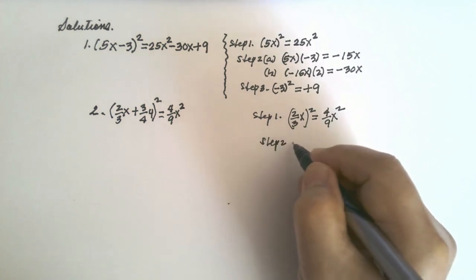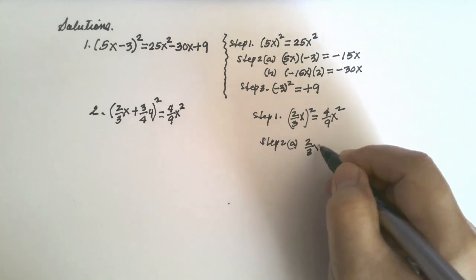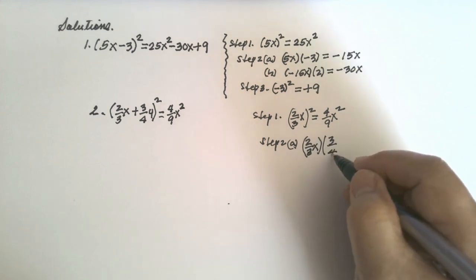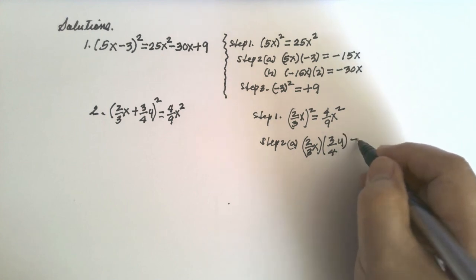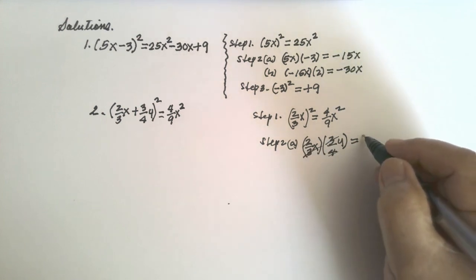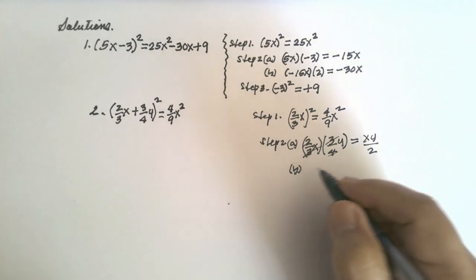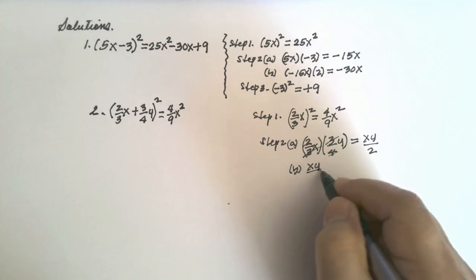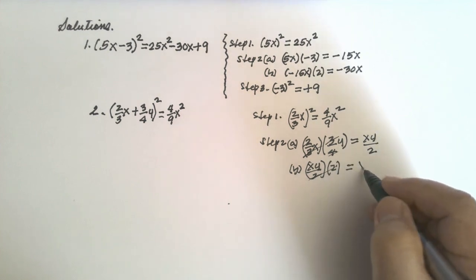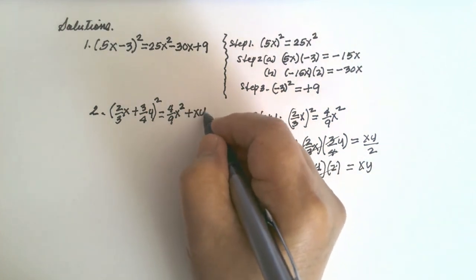Step number two, letter A: multiply the first term by the second term — (2/3 x) times (3/4 y). You can cancel: 3 and 3, then 2 and 4, giving xy over 2. Letter B: multiply xy over 2 by 2 — the 2s cancel, giving positive xy.